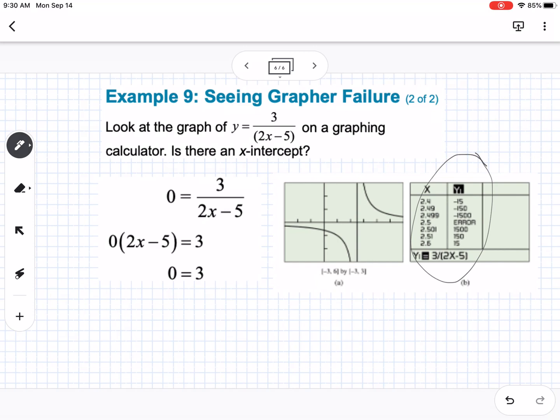So what we would be looking for for an x-intercept would be that the y value is 0. So you'll notice that the negatives get bigger and bigger and bigger, and then we see an error in there at 2.5. So we know that 2.5 is going to cause us to divide by 0. So that's our asymptote right here. And we also can tell that our graph is not going to cross the x-axis. So there is no x-intercept.